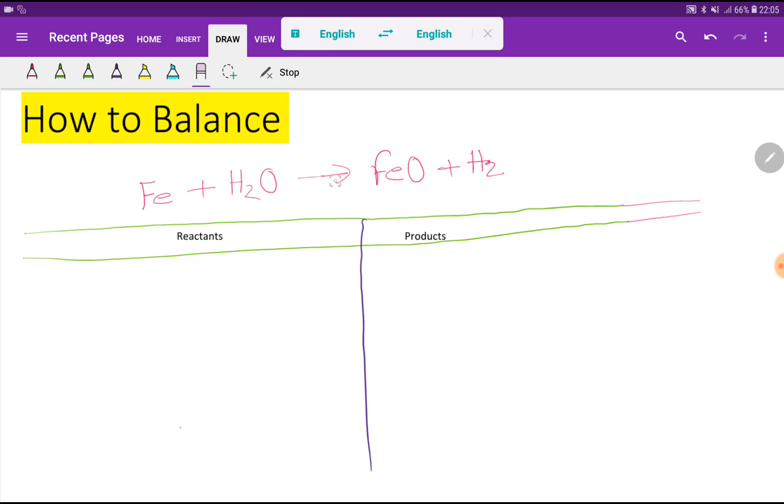To balance this reaction, we have to do a table like this. This is the left hand side, which means the reactant side, and the right hand side means the product side.